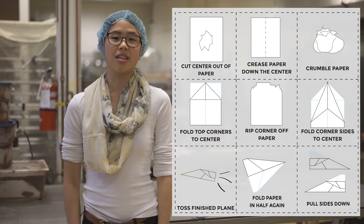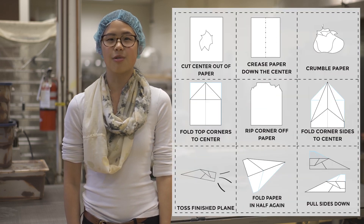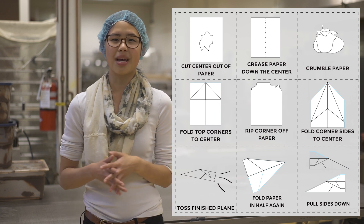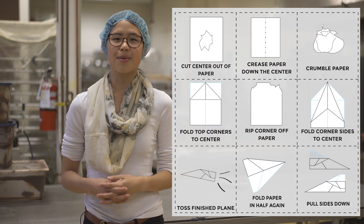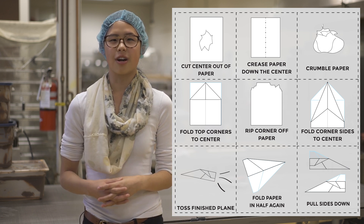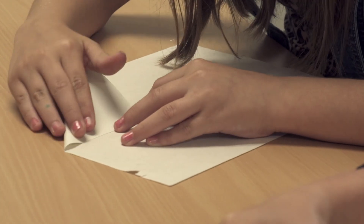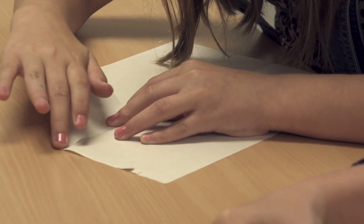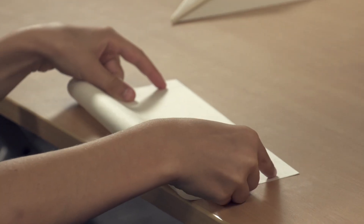You will create your algorithm by first cutting apart the pictures. Next, you will select the six pictures that show the steps needed to make a paper airplane and arrange those pictures in the correct order. After you have everything in order, you will trade algorithms with another student team to test out the algorithm to see if it works.